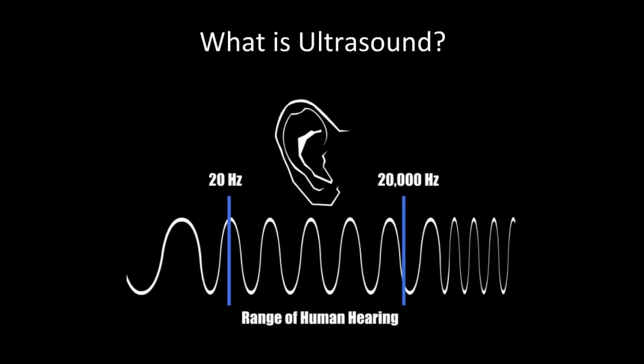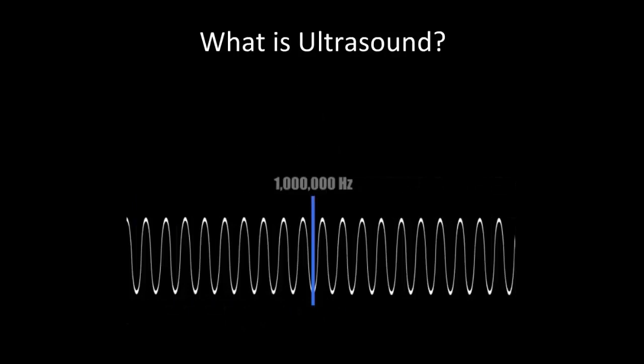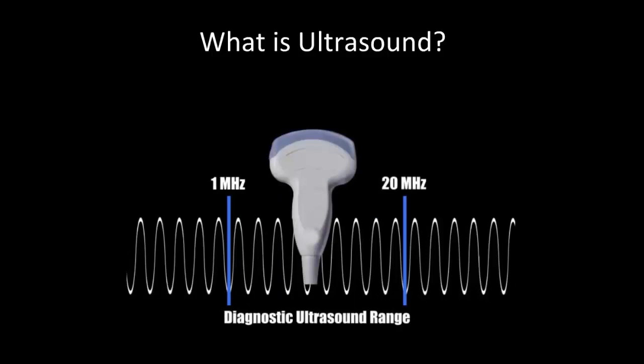So what is ultrasound actually? The human hearing ranges from about 20 Hertz to 20,000 Hertz, where Hertz is the unit of frequency. Sound waves with a frequency lower than 20 Hertz are called infrasound, and sound waves with a frequency greater than 20,000 Hertz or 20 kilohertz are called ultrasound waves. Ultrasound is a sound with a frequency greater than the upper limit of human hearing. Although this limit is quite variable, in a healthy young adult it's about 20,000 cycles per second.